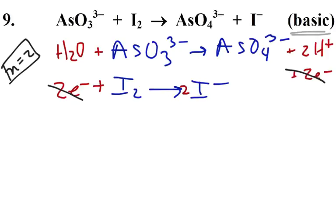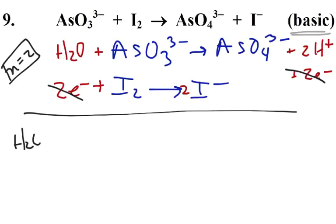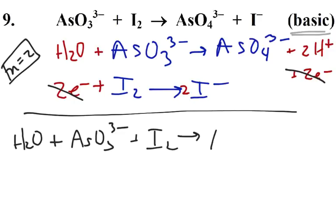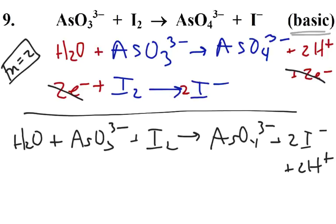I don't see anything else I can cancel out. So my rough equation is going to be water plus AsO3 three-minus, plus one I2, turns into AsO4 three-minus, plus two I minus. On the right-hand side there should also be two H pluses. The basic part is: there's no way I'm going to have two hydrogen ions floating around in a basic solution.